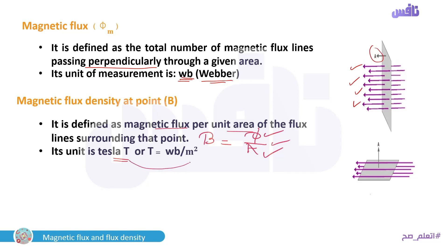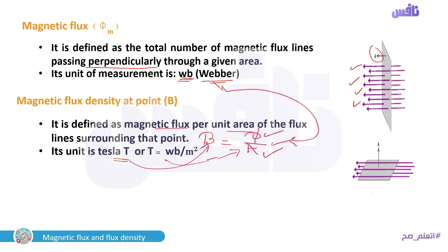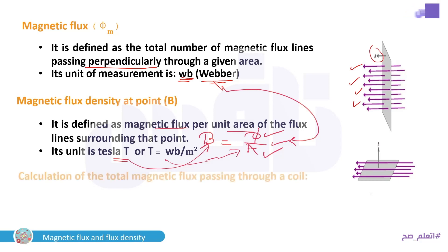B equals Φ over A. The unit of B is Tesla. Tesla is equivalent to Weber per meter squared — Wb/m². This comes directly from the equation: Φ is in Weber and area is in meter squared, so automatically Tesla equals Weber per meter squared.